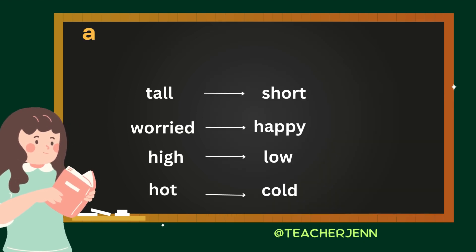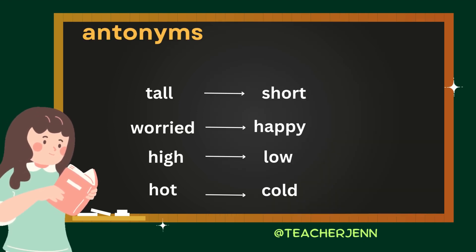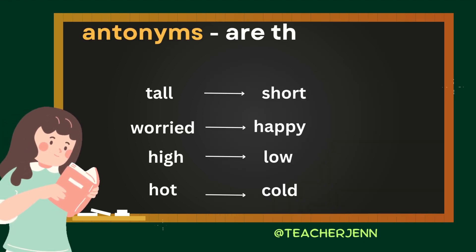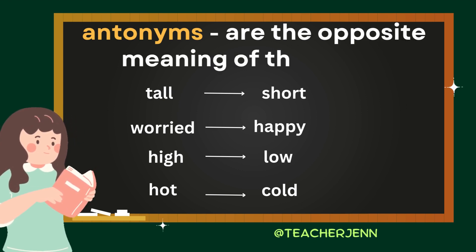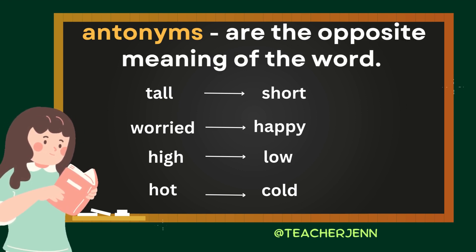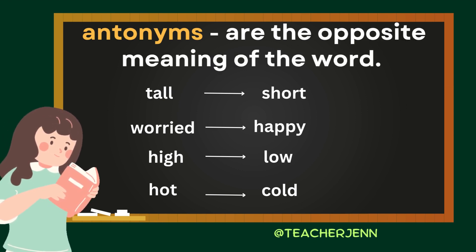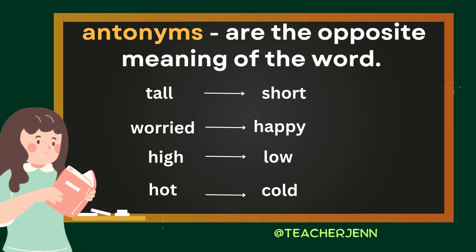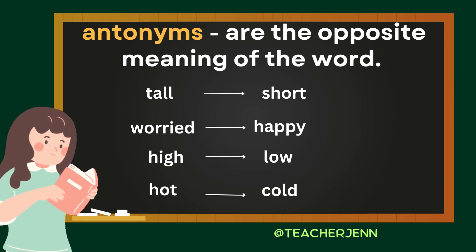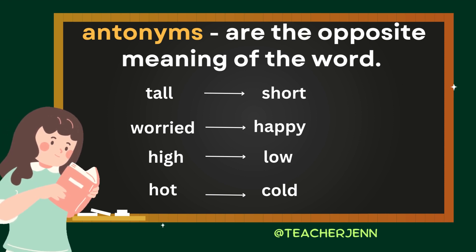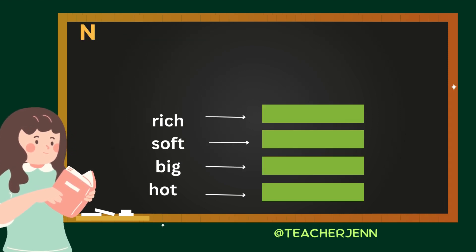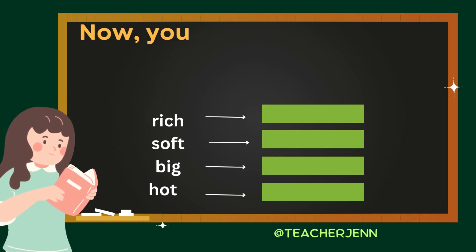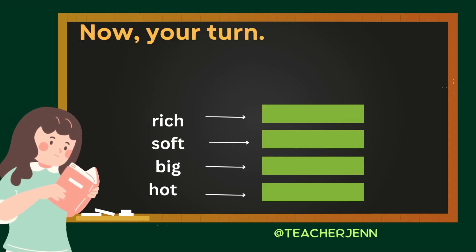Now let's learn about antonyms. Antonyms are words with opposite meanings. For example: tall and short, worried and happy, high and low, hot and cold. Now your turn.